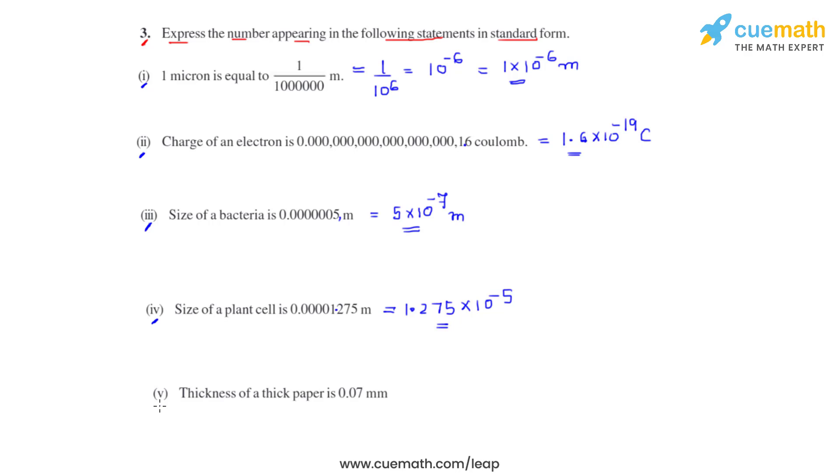Coming to the last bit, which is the fifth bit of this question. We have been given the thickness of a thick paper which is 0.07 millimeters. To convert this into standard form, we must shift the decimal from the given position to after 7.